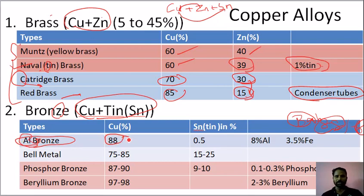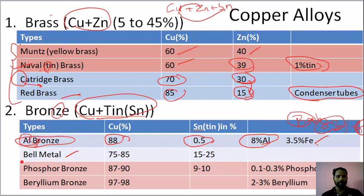This is copper with 8% aluminum. This is bronze. In other words, tin is 0.5%, remaining iron. This is bell metal.